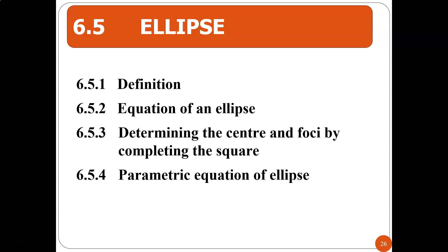This is the fifth subtopic which is ellipse. First we will see the definition of an ellipse, then the equation of an ellipse, then determining the center and foci by completing the square, and also the parametric equation of ellipse. You will have two types of equation: the standard form and the parametric equation.